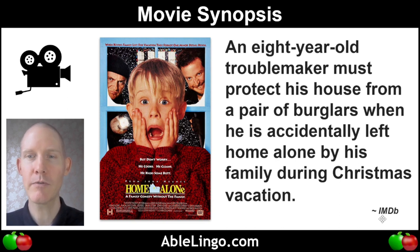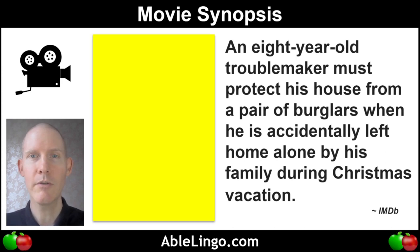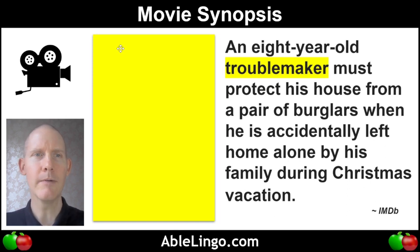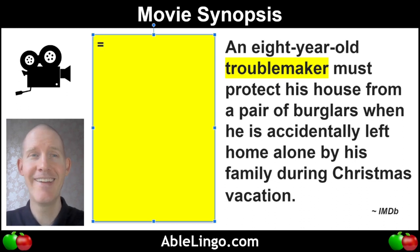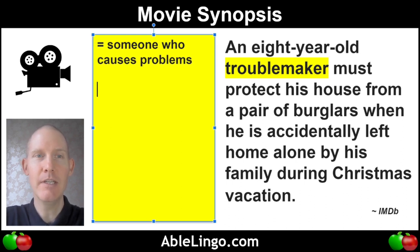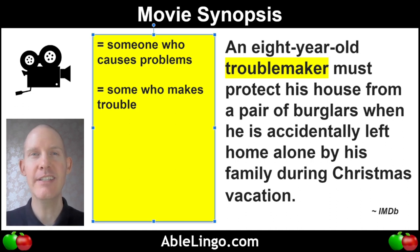So this movie's synopsis was from IMDb — it's the website where they have a ton of information about movies, actors, all that stuff. So let's take a look at the synopsis and make sure we understand some of the vocabulary. First, let's talk about 'troublemaker.' So the kid is eight years old — an eight-year-old troublemaker. A troublemaker is someone who causes problems; in other words, it's someone who makes trouble. If a kid is a troublemaker, usually the adults are a bit stressed when dealing with this child.